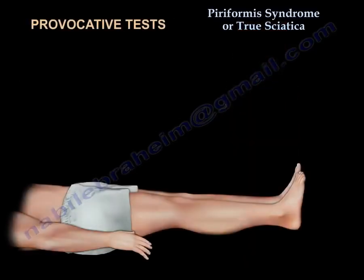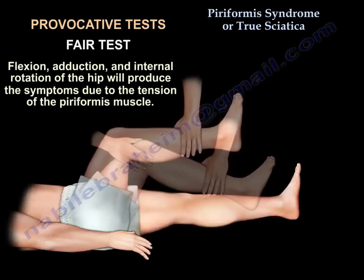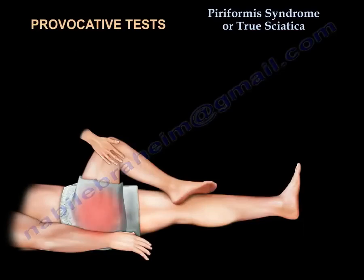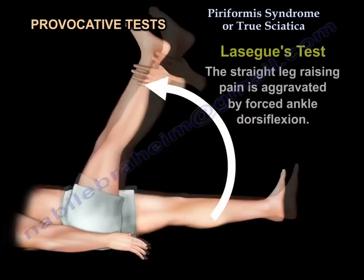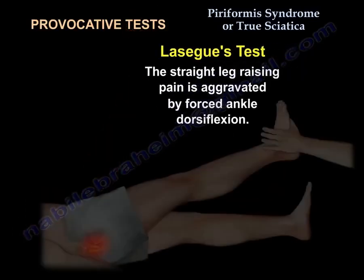You can use provocative tests such as the FAIR test — flexion, abduction, and internal rotation of the hip — which will produce symptoms due to tension of the piriformis muscle. Or the Lasègue test, in which straight leg raising pain is aggravated by forced ankle dorsiflexion.